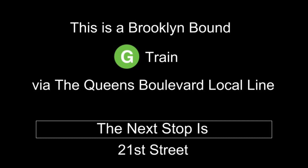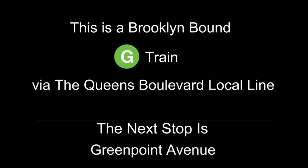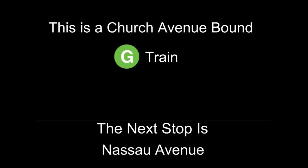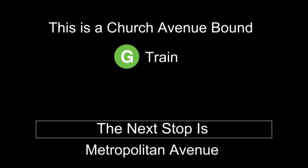This is a Brooklyn-bound G-Train via the Queens Boulevard local line. The next stop is Greenpoint Avenue. This is a Church-Avenue-bound G-Train. The next stop is Nassau Avenue. The next stop is Metropolitan Avenue.